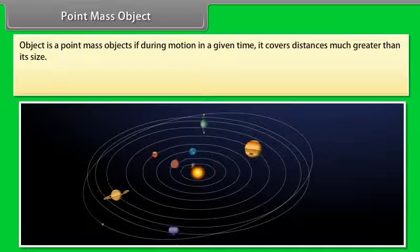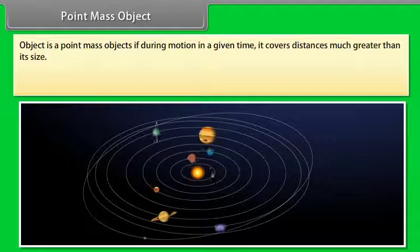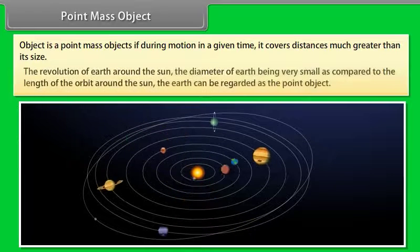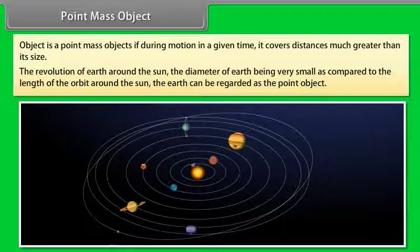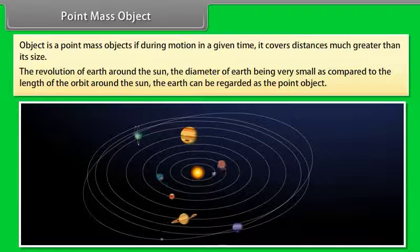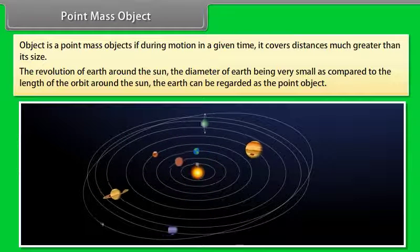Point mass object: An object is a point mass object if, during motion in a given time, it covers distances much greater than its size. Example: the revolution of Earth around the Sun. The diameter of Earth is very small compared to the length of the orbit around the Sun, so the Earth can be regarded as a point object.